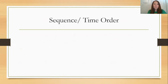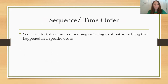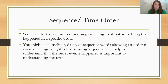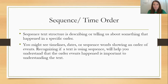Sequence text structure is describing or telling about something that happened in a specific order. You might see timelines, dates, or sequence words showing an order of events. Recognizing if a text is using sequence will help you understand that the order the events happened is important for you to understand the text.